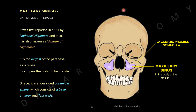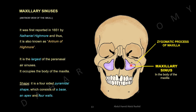This is the anterior view of the skull. We are going to discuss the maxillary sinuses. This is the zygomatic bone, maxillary bone, zygomatic process of the maxilla, and the body of the maxilla. Maxillary sinuses were first reported in 1651 by Nathaniel Highmore and are thus also known as the antrum of Highmore. It is the largest of the paranasal sinuses, occupying the body of the maxilla. Its shape is a four-sided pyramidal shape, consisting of a base, an apex, and four walls.